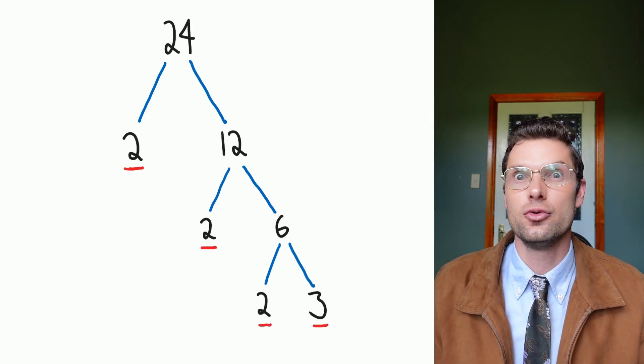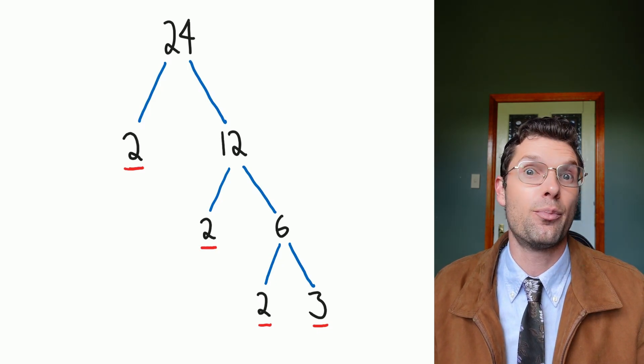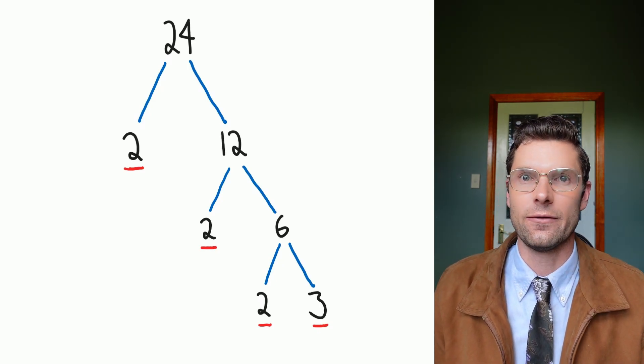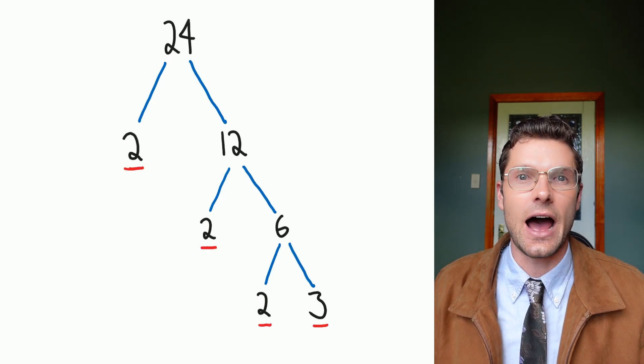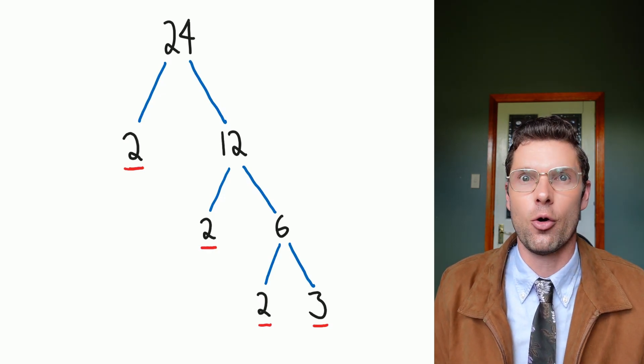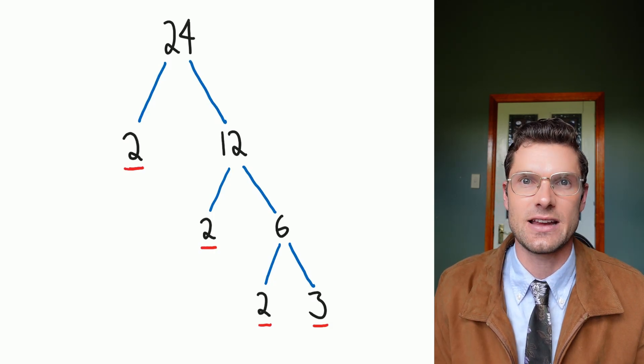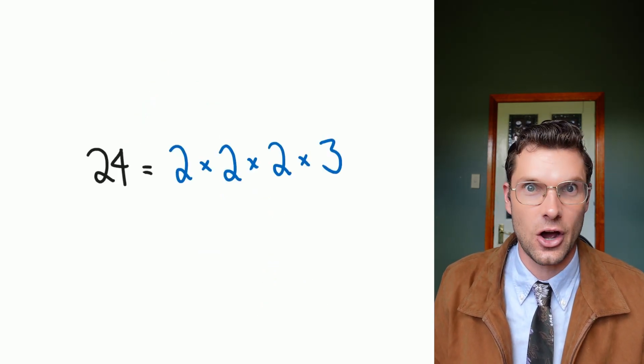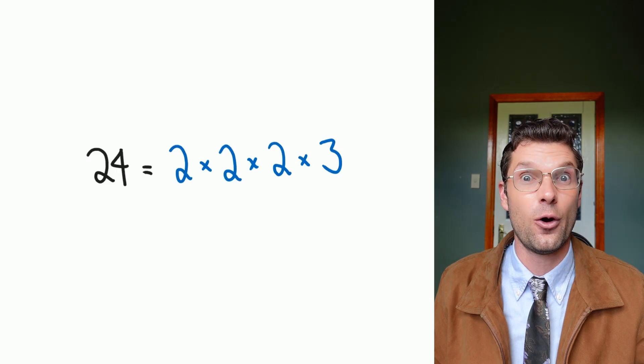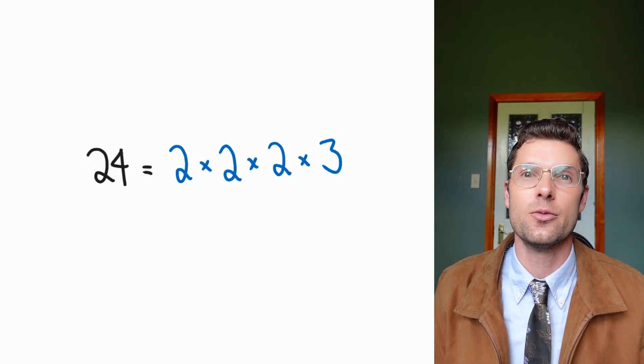So now I've got 2, 2, 2, and 3, and these are the prime factors for 24. A really easy way to check that these are the prime factors: if I multiply all of these together, it will give the answer of 24, or the number I started with. So 2 times 2 is 4, times 2 is 8, times 3 is 24. So that means this is 100% correct.